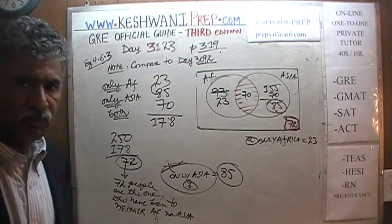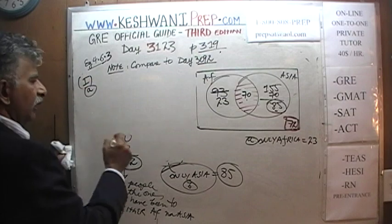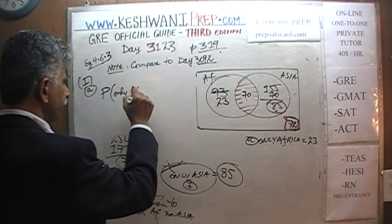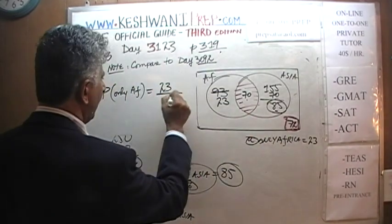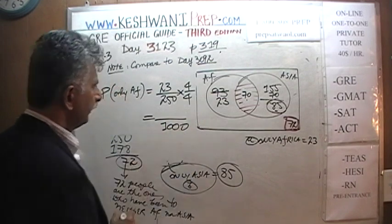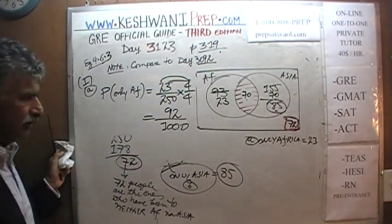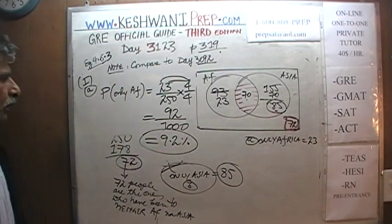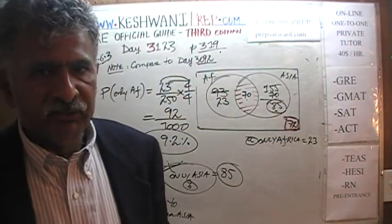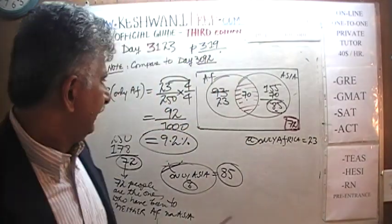Let's finish part A and part B, because the question asks for probability, so we have to convert these into percentages. Part A: how many people have been to only Africa? The probability of picking somebody who has been to only Africa is 23 out of 250. Let's multiply top and bottom by 4: on the bottom we get 1000; on the top, 20 times 4 is 80 and 3 times 4 is 12, so 80 plus 12 is 92. It's 92 over 1000, which is 9.2%. So the answer is 9.2%, or approximately 9%, chance that a randomly picked person has been to only Africa.